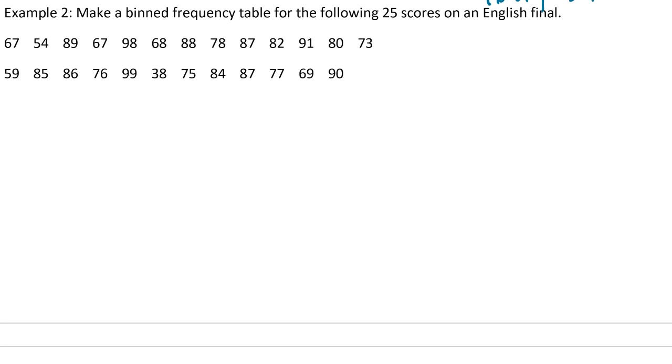For example 2, it says make a binned frequency table for the following 25 scores on an English final. Now this time it says binned. The reason it says that is because there's no categories this time. There's no A, B, C, D, F that we can just count up. So we have to kind of make our own categories.